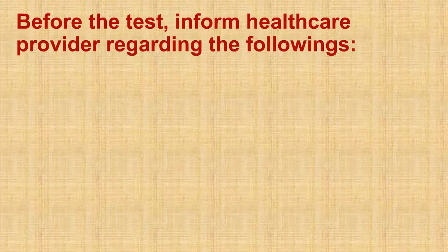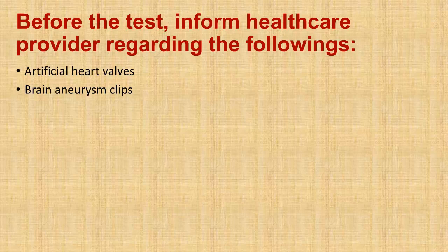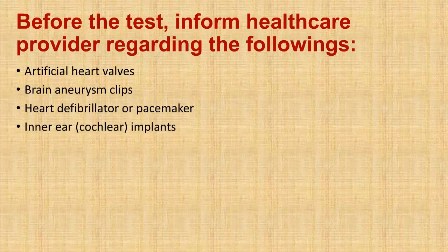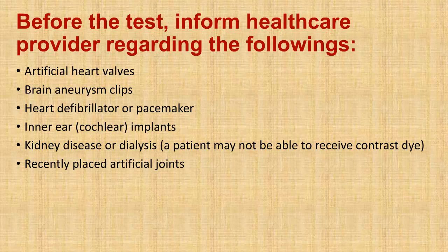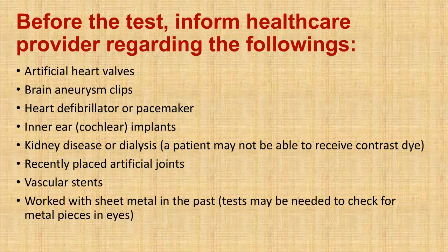Before the test, inform the healthcare provider regarding the following: artificial heart valves, brain aneurysm clips, heart defibrillator or pacemaker, inner ear (cochlear) implants, kidney disease or dialysis (a patient may not be able to receive contrast dye), recently placed artificial joints, and vascular stents. If a patient has worked with sheet metal in the past, tests may be needed to check for metal pieces in the eyes.